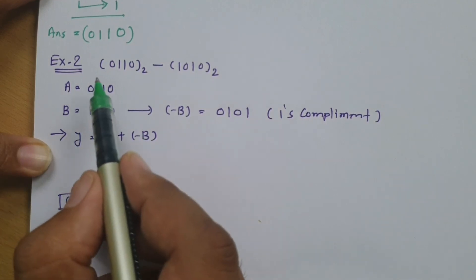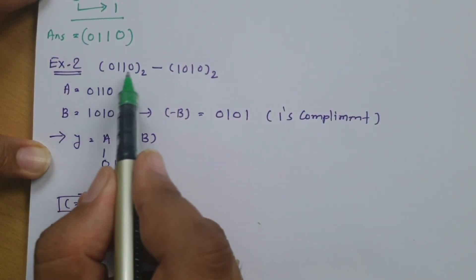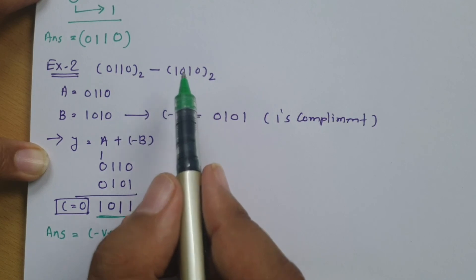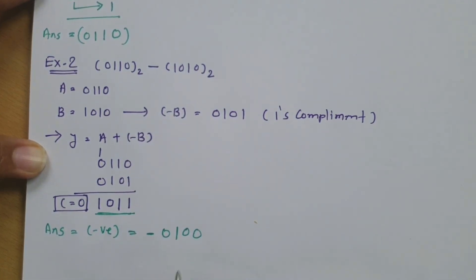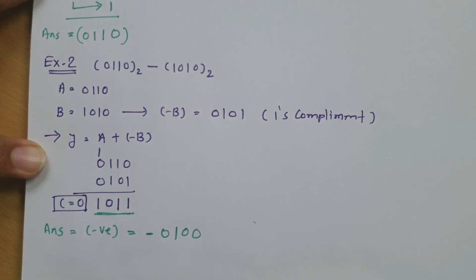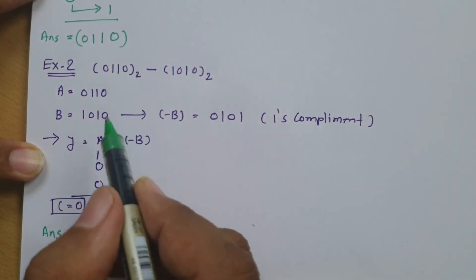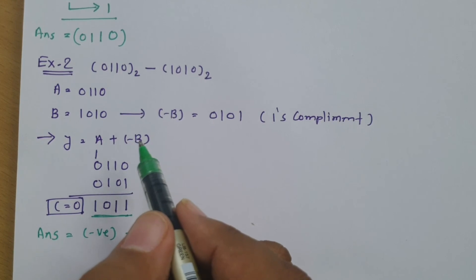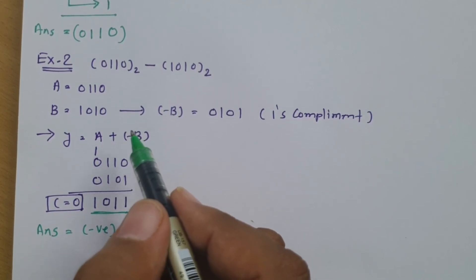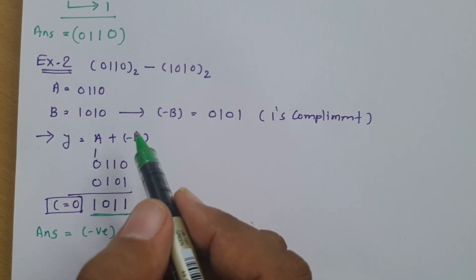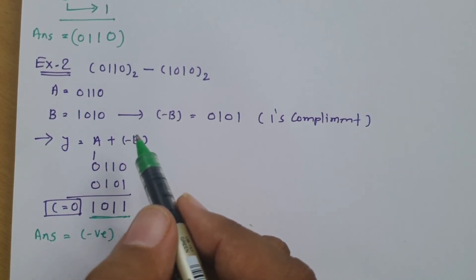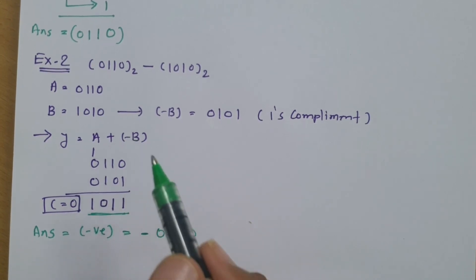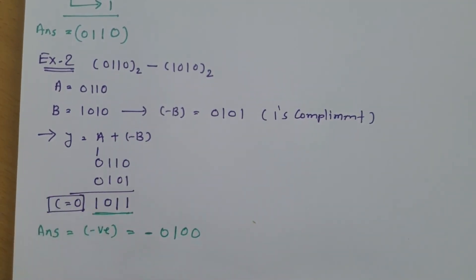We can cross-verify: 0110 is 6 and 1010 is 10, so 6 minus 10 equals minus 4, which matches our answer of minus 0100. So ultimately, we perform A plus minus B where minus B is the one's complement of B, check the carry, and if carry is 1 the answer is Y plus 1 (positive); if carry is 0 the answer is the one's complement of Y (negative).